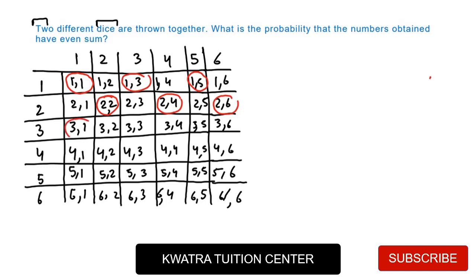Then 3,1 is possible. 3,5 will be there, which is 8. Next, let's see. 4,1 is not possible. 4,2 is, 4,4 is, 4,6 is. 5,1 is, 5,3 is, 5,5 is. And then you can see 6,2 will be, 6,4 will be, 6,6 will be. And you can see there are 18 favorable outcomes here.